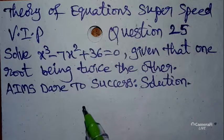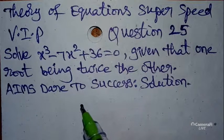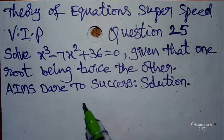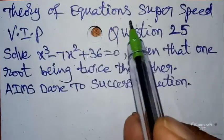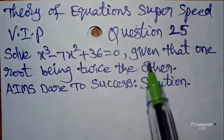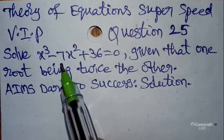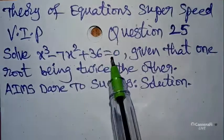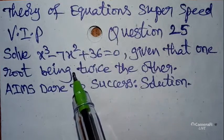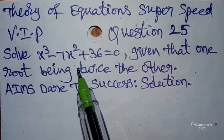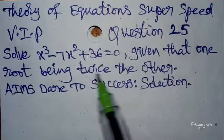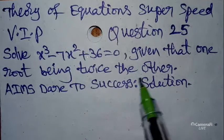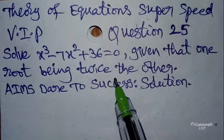Hi, hello, namaste my dear friends and students, how are you? I hope you're fine. Today I came with a new trick and a new video. Today I wanted to discuss with you Theory of Equations super speed VIP questions, Part 25. Solve x³ - 7x² + 36 = 0, given that one root is twice the other. This is our today's question.